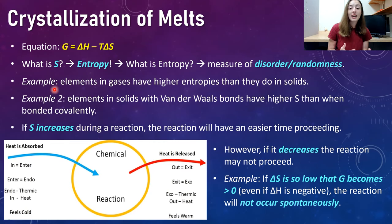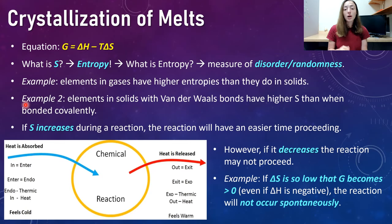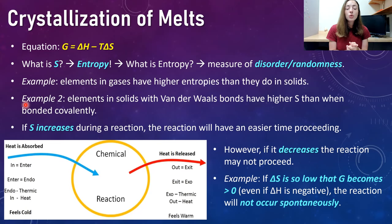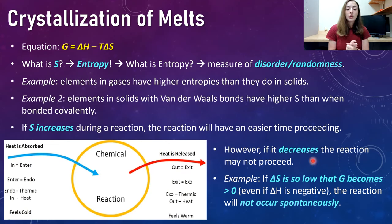Elements within gases will have higher entropies than in solids because they're more disordered or random within gases and more ordered in solids. In solids, those with van der Waals bonds have higher entropy values than those bonded covalently, because the bond strengths of van der Waals bonds are lower than those of covalent bonds. If entropy increases during a reaction, the reaction will have an easier time being spontaneous, but it also depends on H. If S decreases during the reaction, it will hinder that reaction's progress.